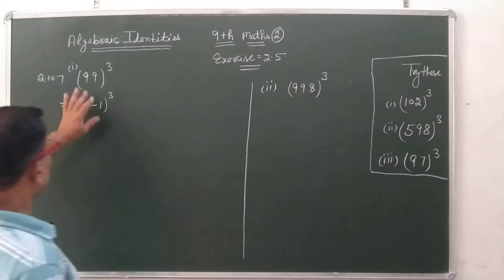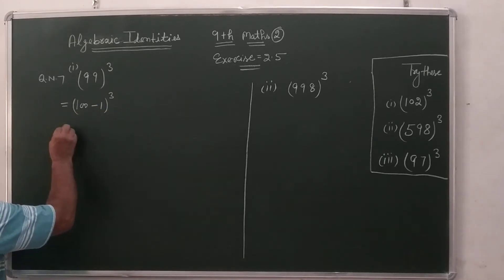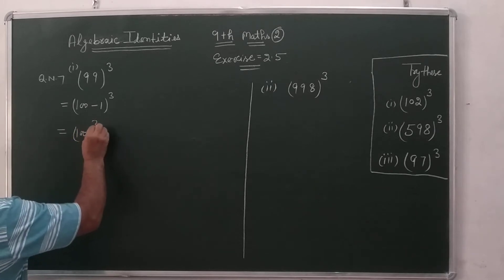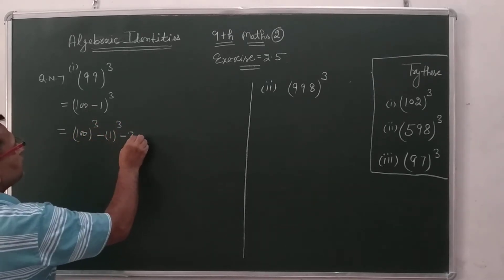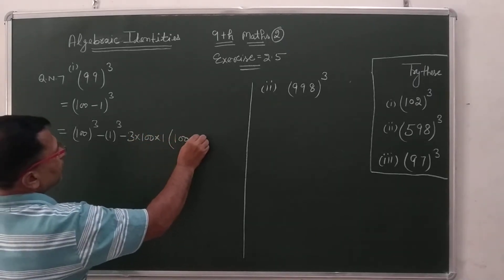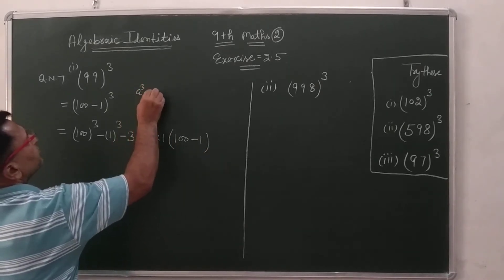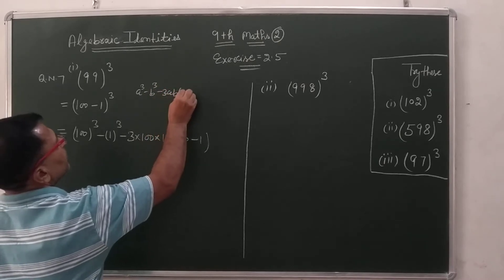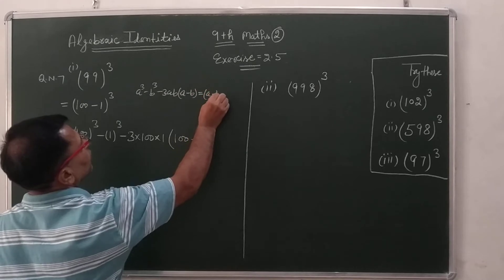So you can write 99 as 100 minus 1 cube. You know very well, 100 ka cube minus 1 ka cube minus 3 into 100 into 1 into 100 minus 1. You know very well, a cube minus b cube minus 3ab into a minus b is equal to a minus b ka whole cube.